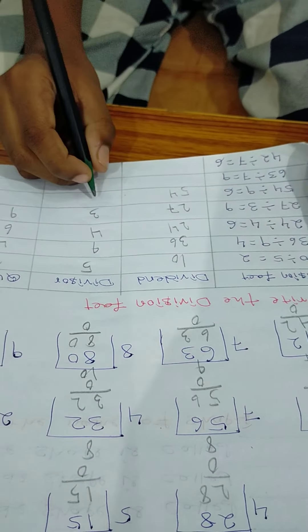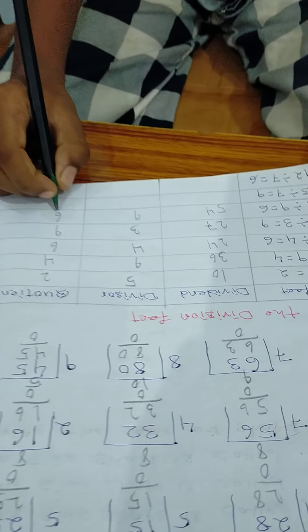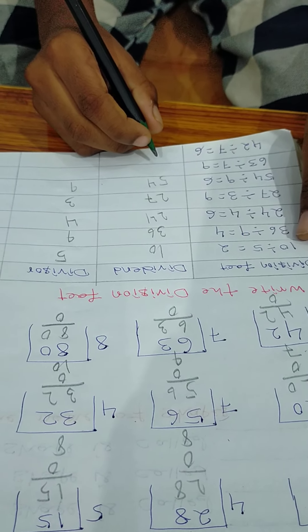54 divided 9 is equal to 6. Dividend is 54. Divisor is 9. Quotient is 6.